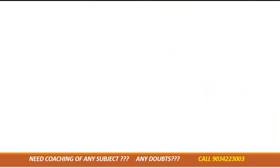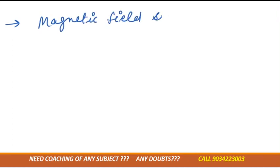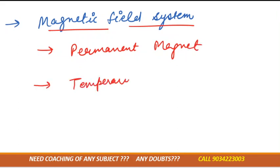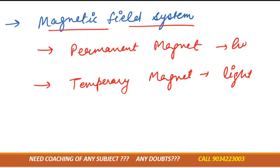The first thing we'll use in this is the magnetic field system. As I told you, it is not compulsory that we'll always use a permanent magnet — we can use a temporary magnet also. The reason for using a temporary magnet is that temporary magnets are light in weight, whereas permanent magnets are heavy in comparison.